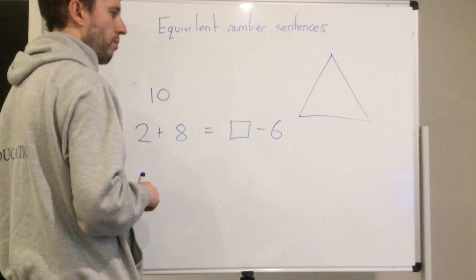So that means we are needing to add these two together. 6 plus 10 equals 16 because 6 plus 10 is the same as me saying 16 take 6 equals 10, which is the same as what my other side is.